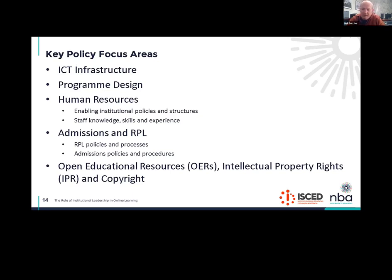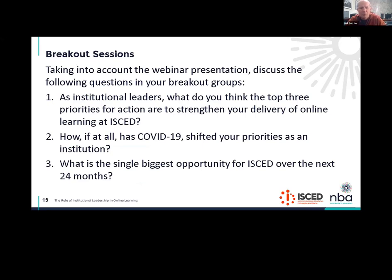We're unfortunately running a bit behind schedule because we started slightly late and I've probably taken too long to talk. So what I'm going to do is rather than breaking up into groups, I'm going to move on to the next slide and just pose this to you, but also give you an opportunity to ask questions and make some comments in response to the presentation I've just made. Let me open up here — if people would like to raise their hands and ask questions or make comments — and if not, just ask you to think about what your response to these questions might be: What do you think the key priorities are? How do you think COVID-19 has shifted your priorities? And most importantly, what do you think the single biggest opportunity for ISCED is over the next two years?